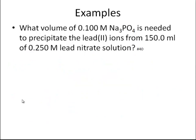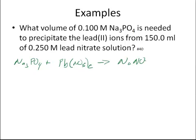Let's try another one. What volume of 0.1 molar sodium phosphate is needed to precipitate the lead? First thing I need to do is write out the reaction. I've got Na3PO4 plus Pb(NO3)2, and that's going to make some sodium nitrate and Pb3(PO4)2.